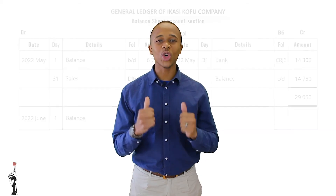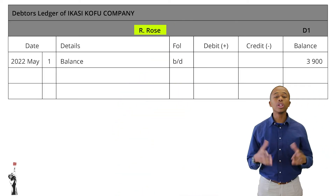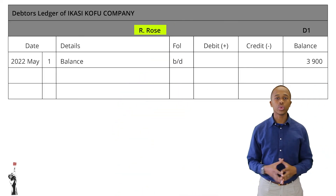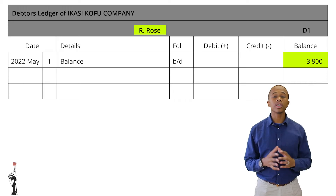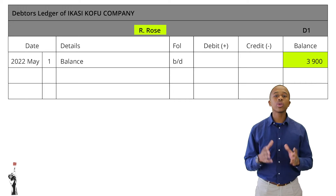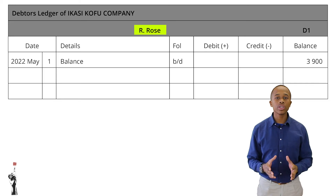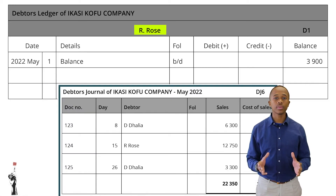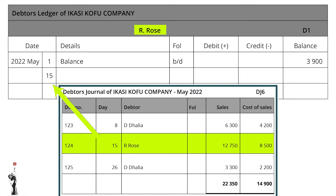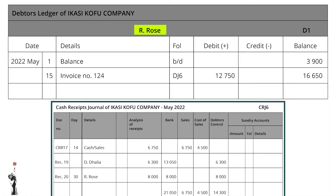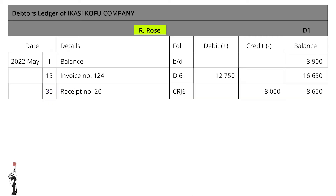Good job. You have successfully recorded the two accounts. Now let's look at the debtors ledger. We'll first be looking at R Rose — the balance was already recorded in the first part of this lesson. On the 15th, R Rose bought goods on credit from us, and on the 30th they paid a part of their credit. These two transactions should be recorded in R Rose's debtors ledger in chronological order.